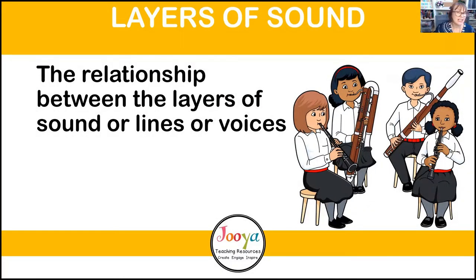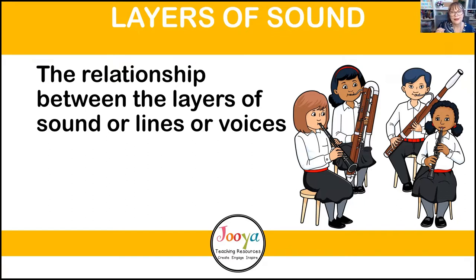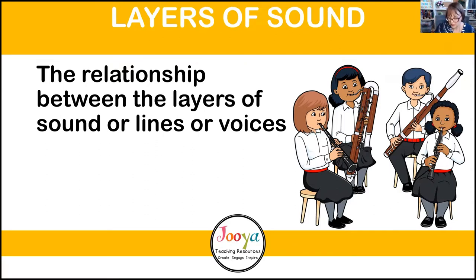Texture and density will always depend on not only the number of instruments playing but what those instruments are actually doing. Layers of sound — it's the same thing: the relationship between the layers, lines, or voices. With a woodwind quartet — clarinet, oboe, bassoon, and contrabassoon — we don't know if the bassoon and contrabassoon are doing similar or parallel motion, an octave apart. Those are the sorts of things that come into texture and the layers of sound.